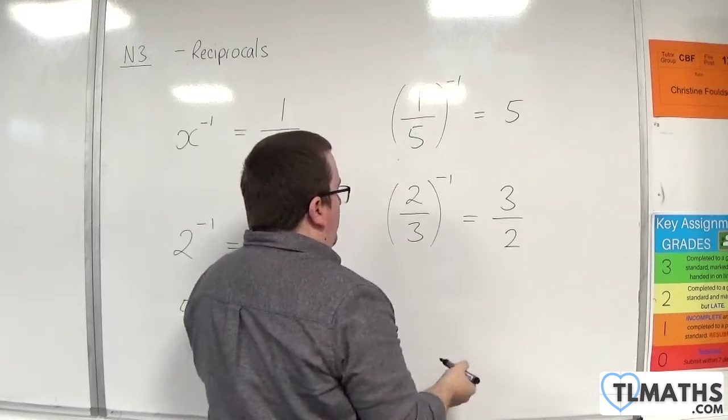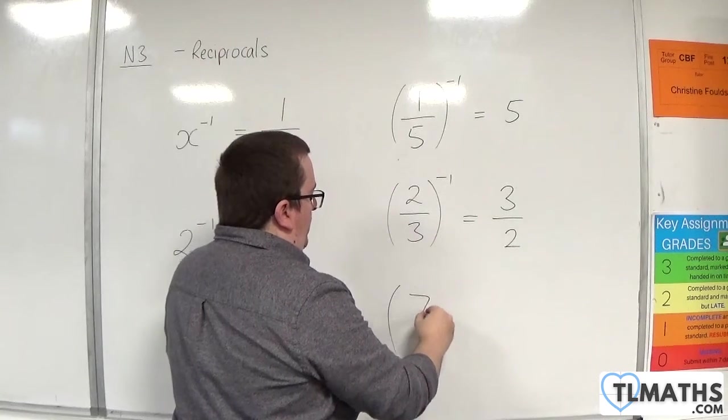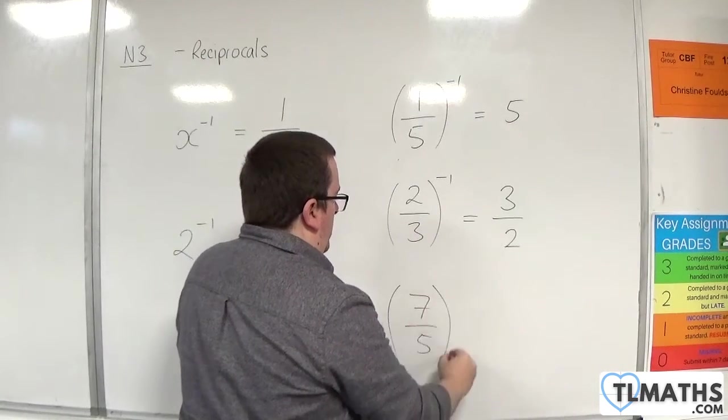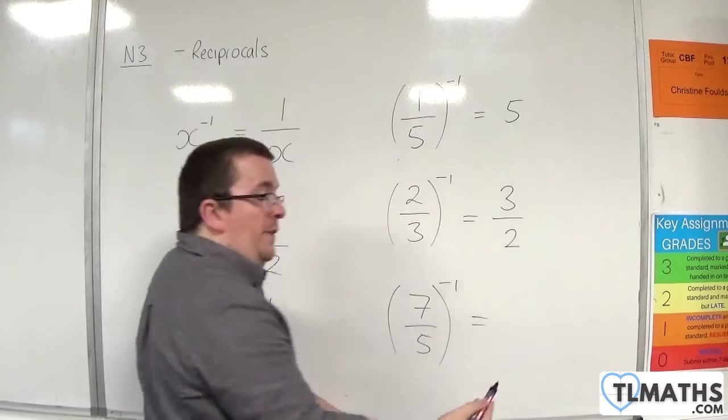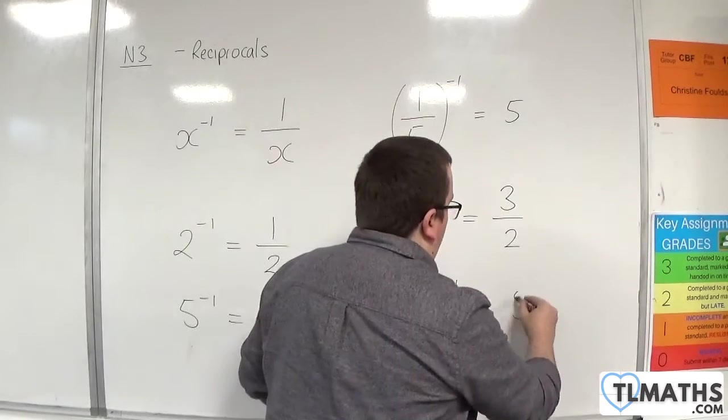If you just have any odd fraction, let's say 7 fifths, and you want to find the reciprocal of 7 fifths, easy, it's 5 sevenths.